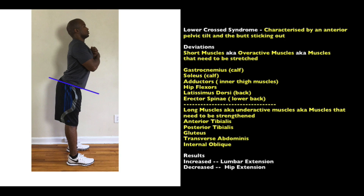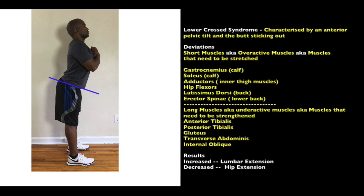The muscles that are lengthened and need strengthening are the anterior tibialis, the posterior tibialis, the gluteus (buttocks), the transverse abdominis, and the obliques. The abs — transverse abdominis and internal oblique — are in the front and are being stretched out, so they need to be strengthened to pull the lumbopelvic hip complex back to level. As a result, we see increased lumbar extension — the lower back is extra curved — and decreased hip extension.